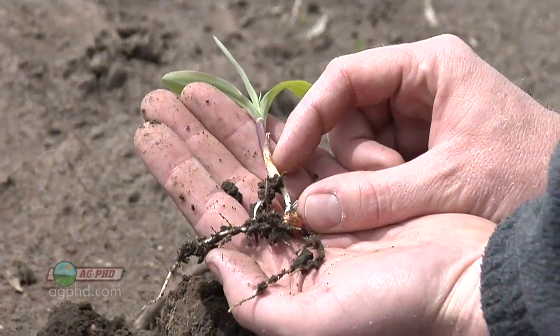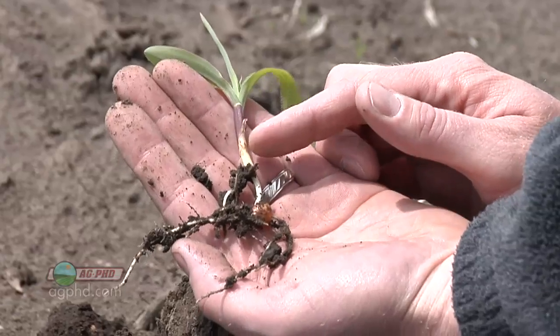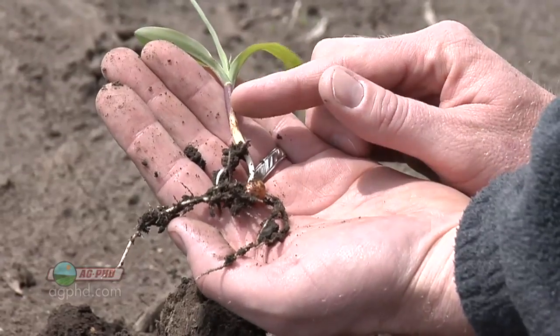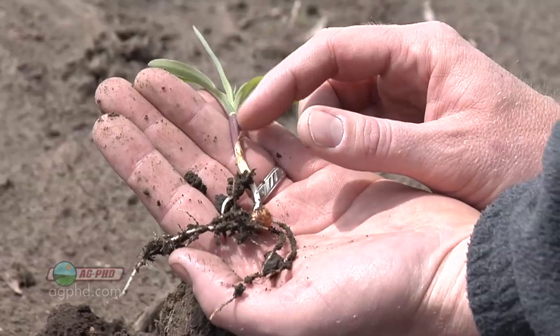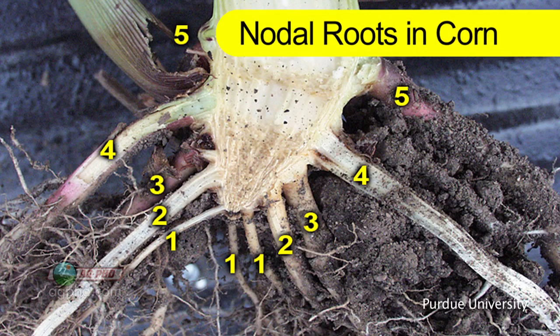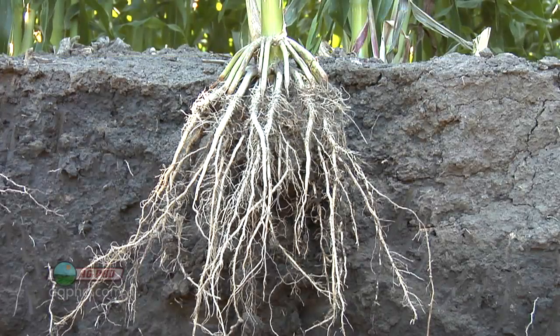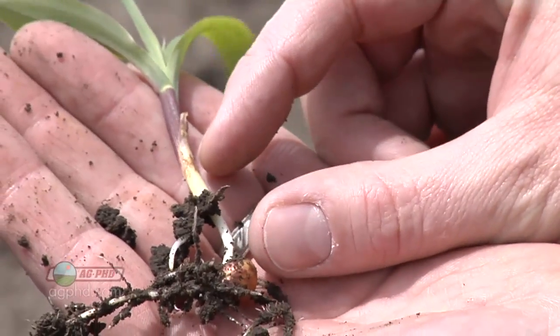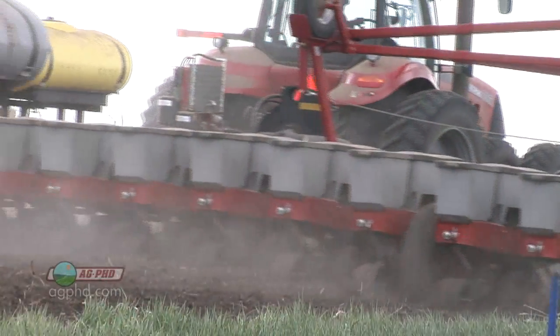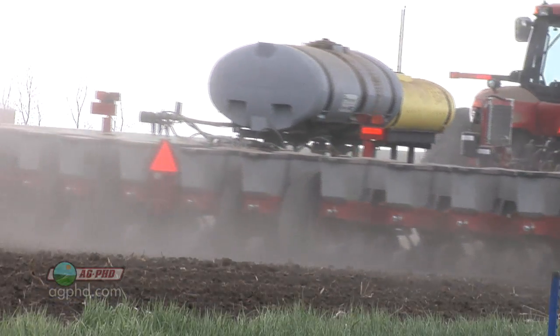Corn has to be an inch and a half deep because above that seed, first there's going to be a mesocotyl that needs to be at least three quarters of an inch long. Then above that mesocotyl, the nodal roots start forming — five rings of nodal roots that are the main root system for gathering nutrients and water. Those five rings need at least three quarters of an inch so they don't pop above ground. Three quarters for the mesocotyl plus three quarters for the nodal roots equals an inch and a half — the most shallow you can possibly plant corn without running into trouble.